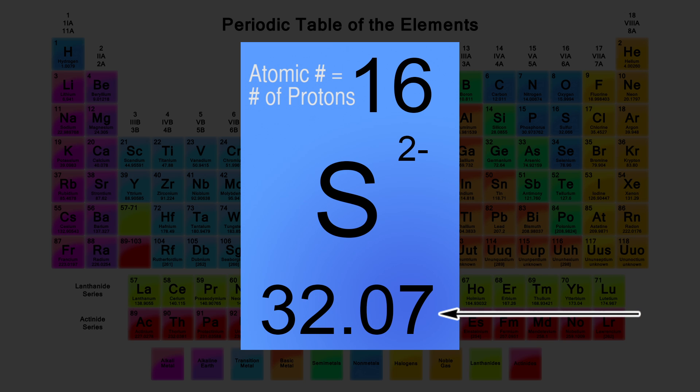At the bottom, we can see the atomic molar mass. This is the mass in grams that make up one mole of the element sulfur. In this case, one mole of sulfur has a mass of 32.07 grams.